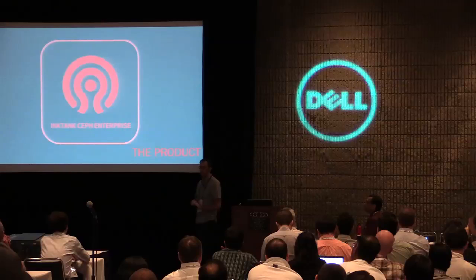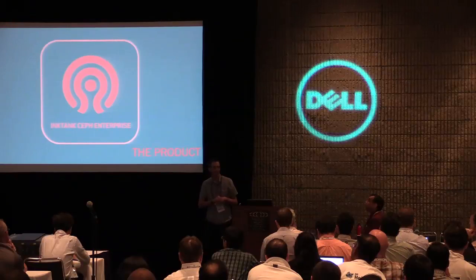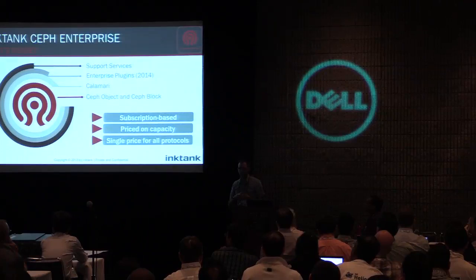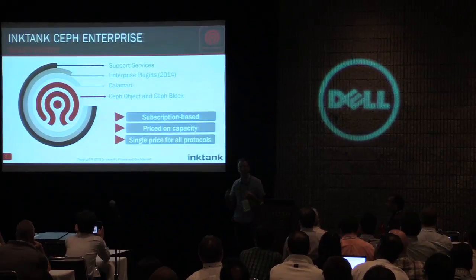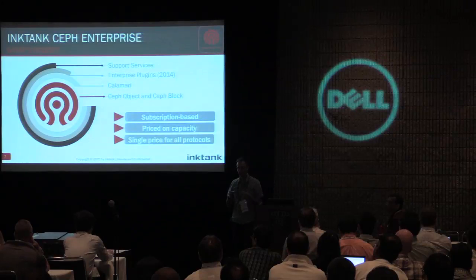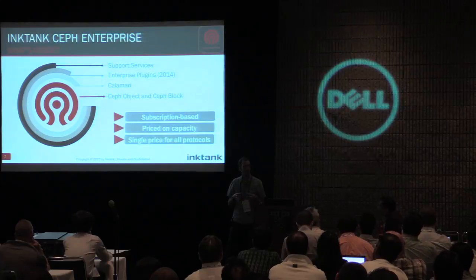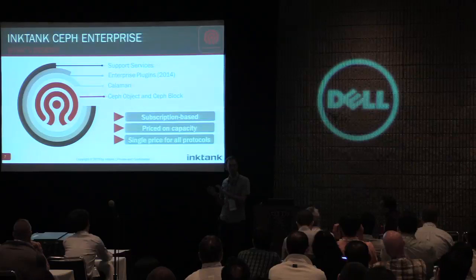About six or seven months ago we created a product around Ceph, with the upstream open source project and InkTank Ceph Enterprise as the downstream commercial product. The product has four core components: the open source software at the base, and importantly — people often get confused — from a software standpoint there's actually less in the commercial product than in the full community build. We only ship bits we have formally tested and QA'd, and right now that covers the object and block side. The file system exists in the community or upstream project only.